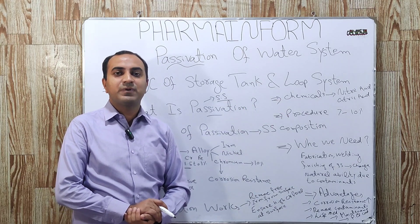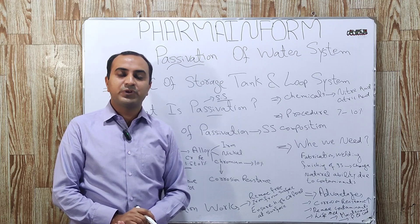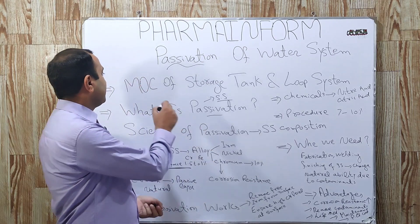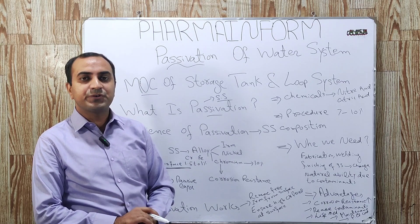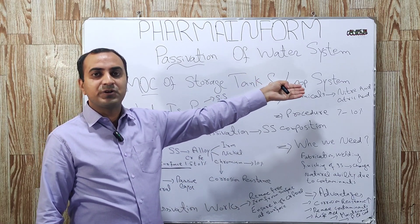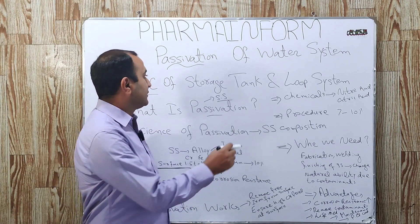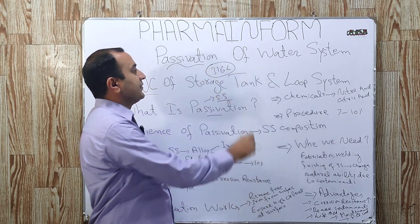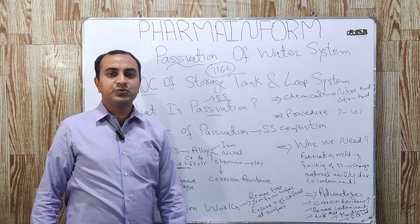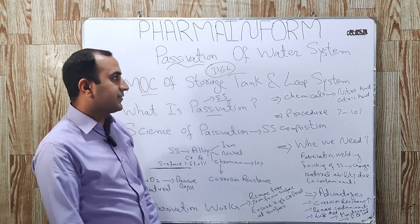What is the MOC of storage tank and loop circulation system? Material of construction of these storage tanks and loop circulation system is stainless steel. 316L stainless steel grade is used for construction of these loop systems and storage tanks.